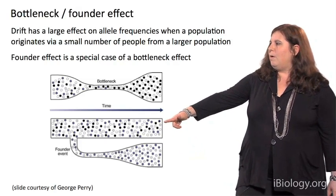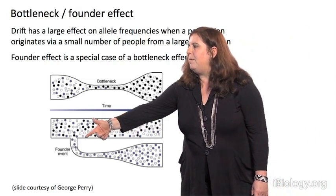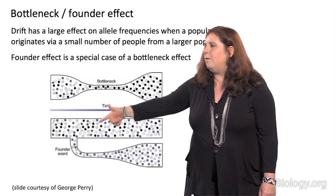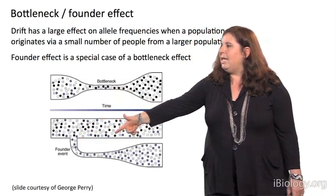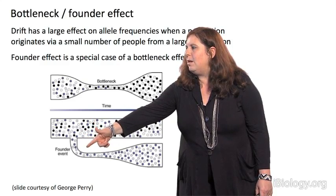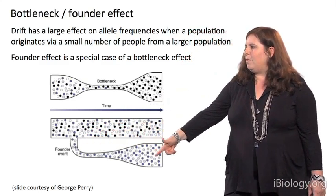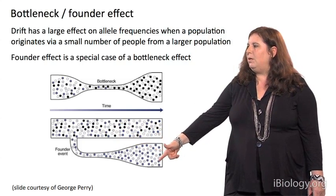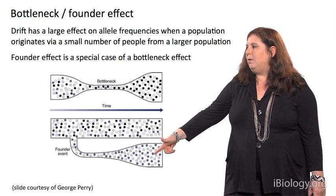And in this case, it's where a population, a small population, breaks off from the larger population. And again, there's going to be increased genetic drift in this initially small population. And here, by chance, we just happen to see more of these dark blue and light blue alleles.